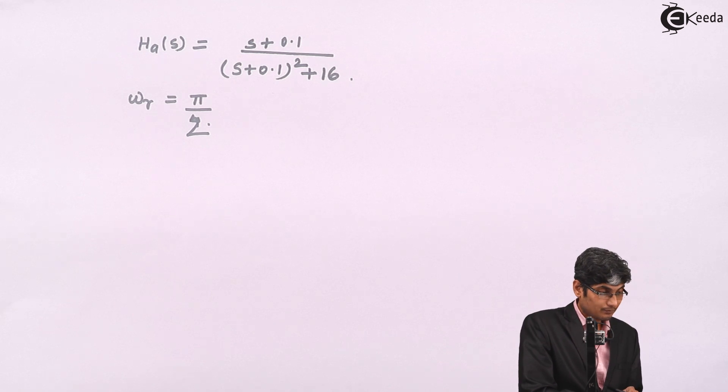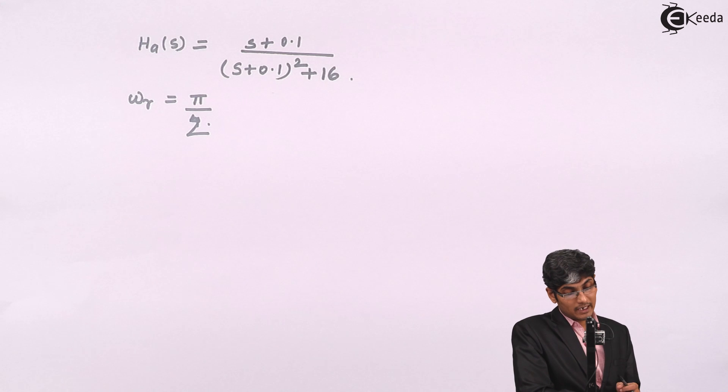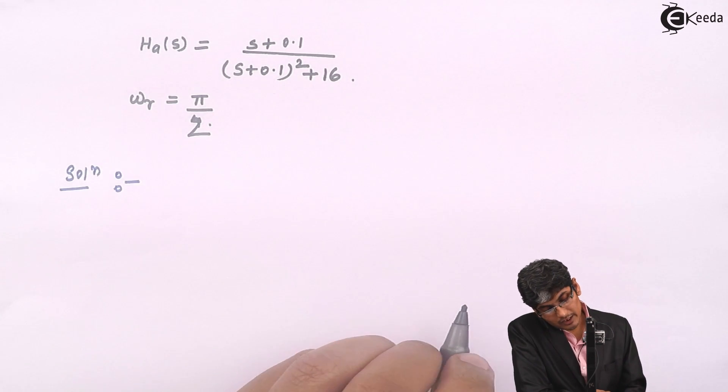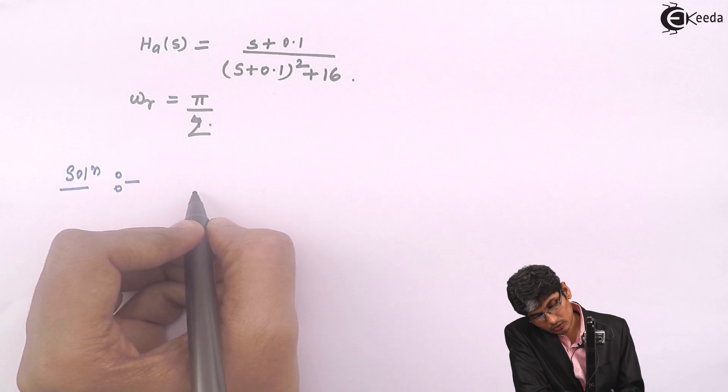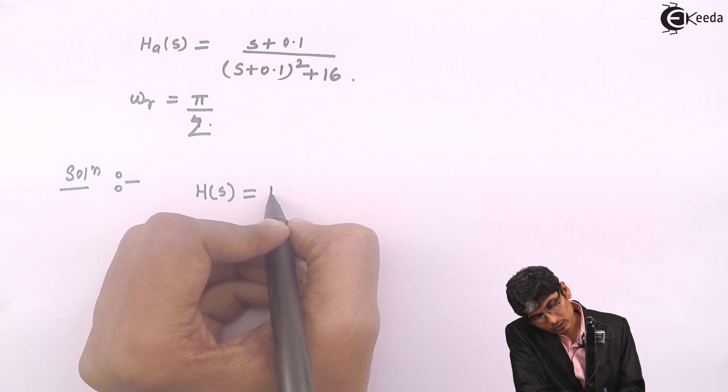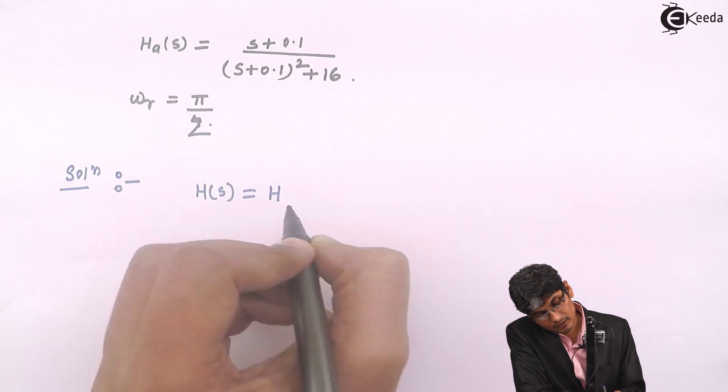Let us take it as pi by 2. Now, whenever you solve a bilinear transformation method, the solution is we will replace or we know that H of S is equal to H of Z.